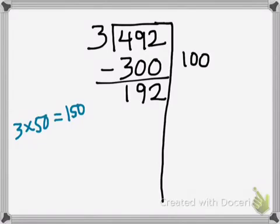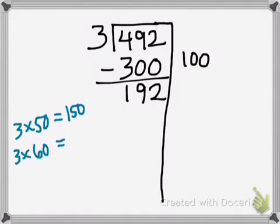I know that 3 times 50 gets me 150, because 3 times 5 gets me 15 — add a zero for the 50. 150 is pretty close to 192, but maybe I could even get closer. So maybe I want to try 3 times 60. It doesn't matter what numbers you try, but try and pick numbers that are easy for yourself — numbers that end with zero, benchmark numbers, that sort of thing. I know 3 times 6 gives me 18, and with the 60 I add a zero to the end.